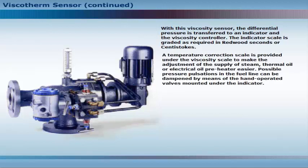A temperature correction scale is provided under the viscosity scale to make the adjustment of the supply of steam, thermal oil or electrical oil preheater easier. Possible pressure pulsations in the fuel line can be dampened by means of the hand operated valves mounted under the indicator.